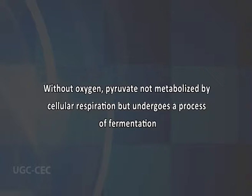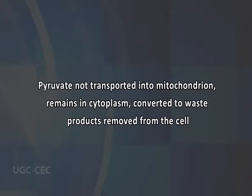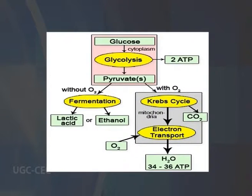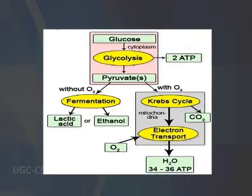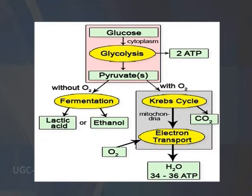Without oxygen, pyruvate is not metabolized by cellular respiration but undergoes a process of fermentation. The pyruvate is not transported into the mitochondrion but remains in the cytoplasm, where it is converted to waste products that may be removed from the cell. This serves the purpose of oxidizing the electron carriers so that they can perform glycolysis again and removing the excess pyruvate.